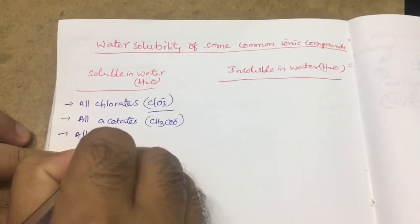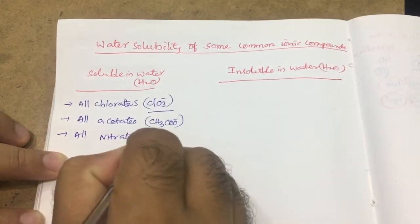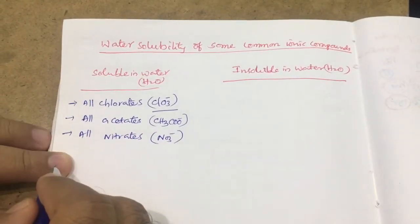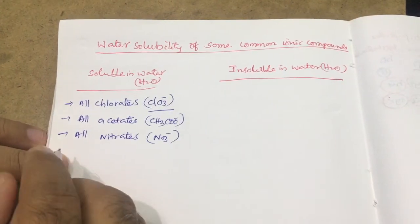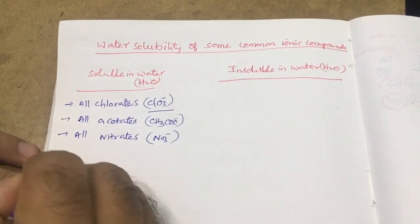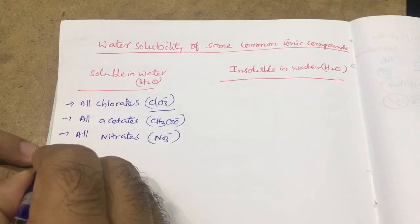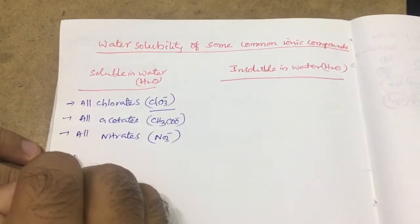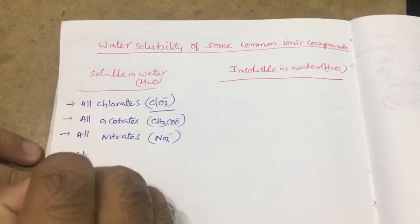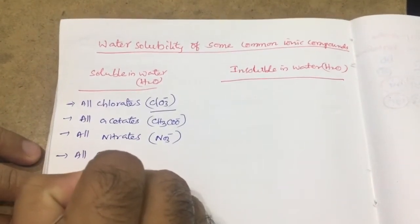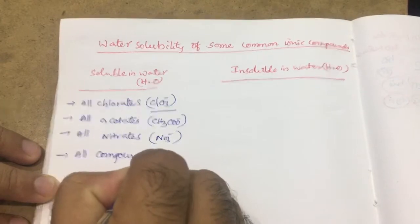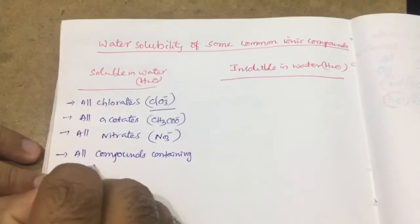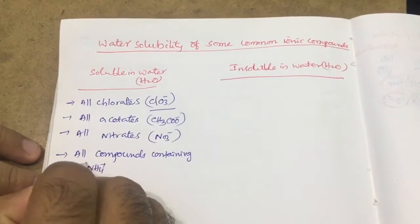All nitrates, NO3 minus, along with any positive charge, that is also soluble in water. Next, all compounds containing the ammonium ion, NH4 plus.